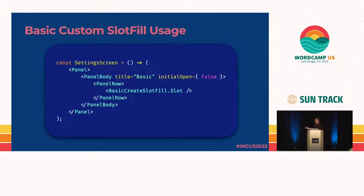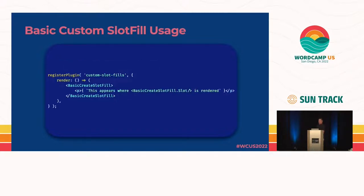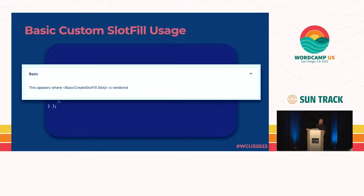For the next slides, assume I have a settings screen being rendered. This is how we expose the slot — we've created our slot, we're importing it, now we're exposing it inside our settings screen. Then we register a plugin which uses that custom slot we've made. When that renders, it looks like this — this is my settings screen, this is a panel.